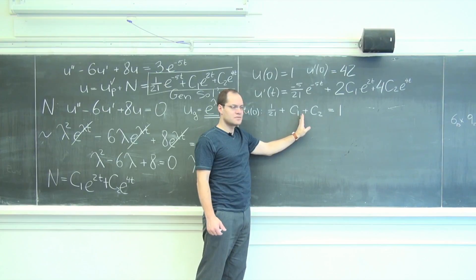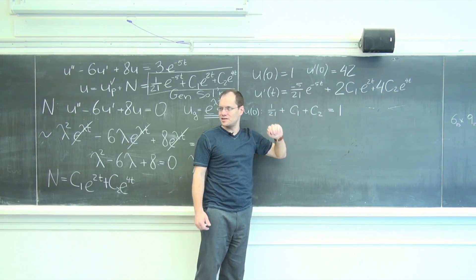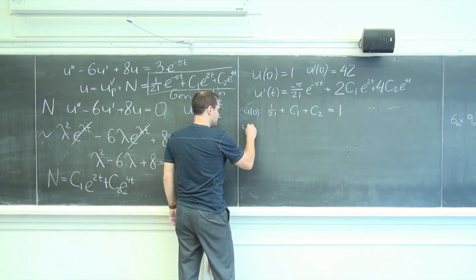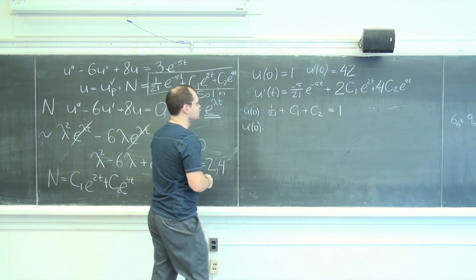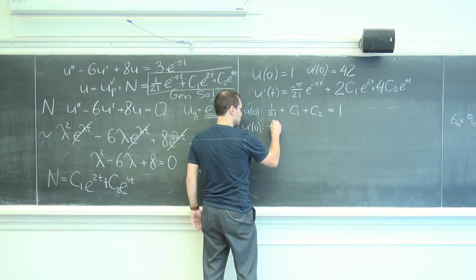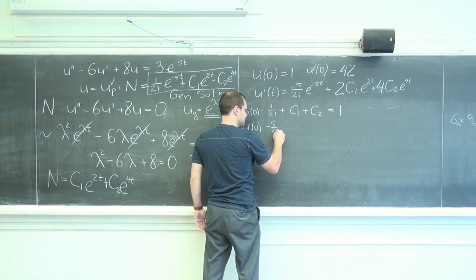So we're going to, so that will determine c1 and c2. From u prime of zero, we have minus 5 over 21.